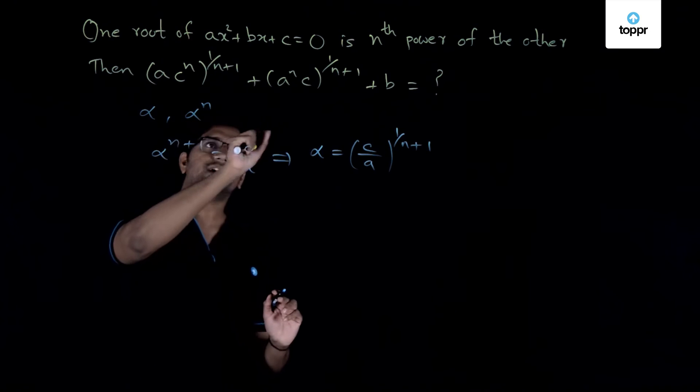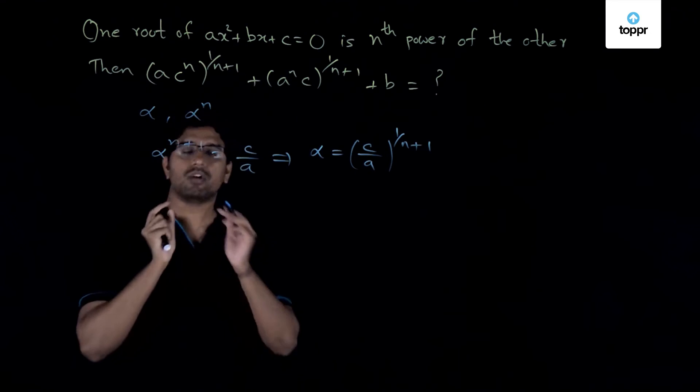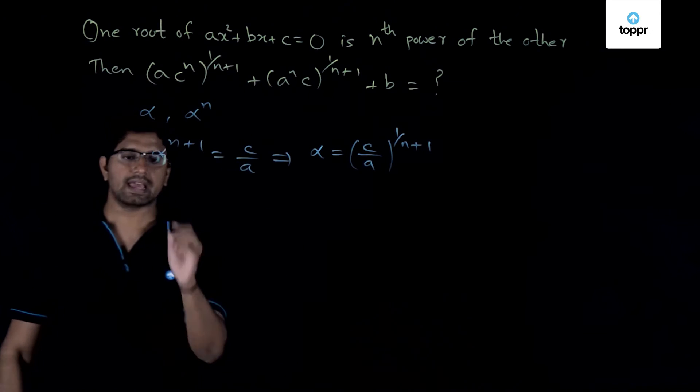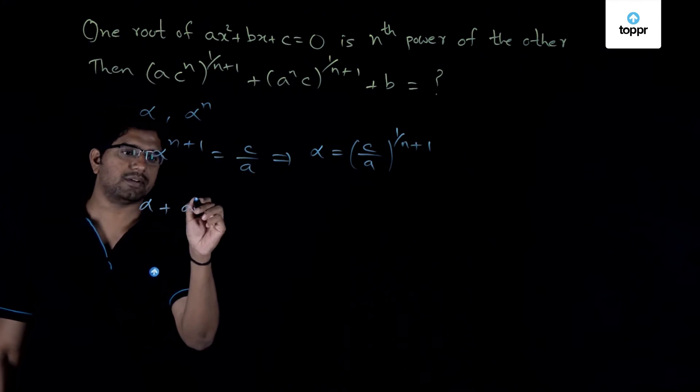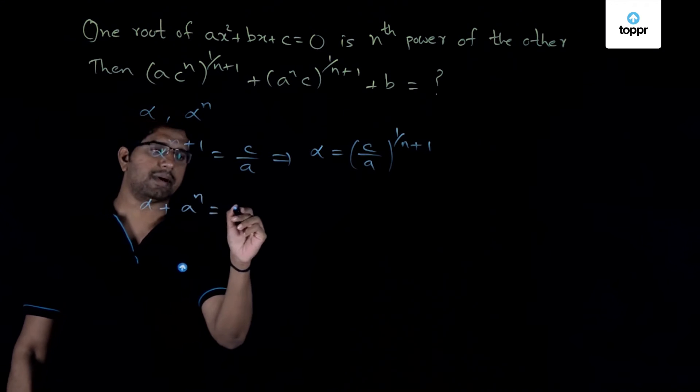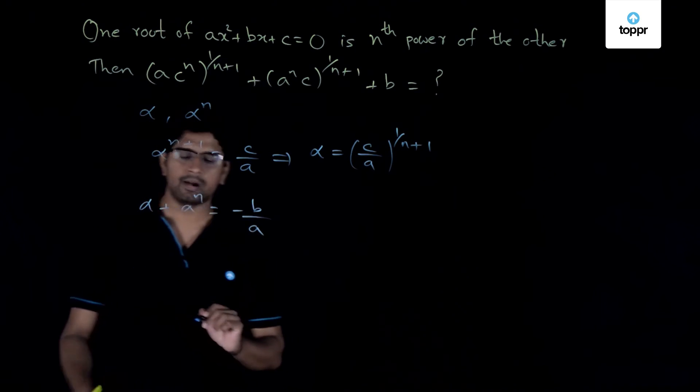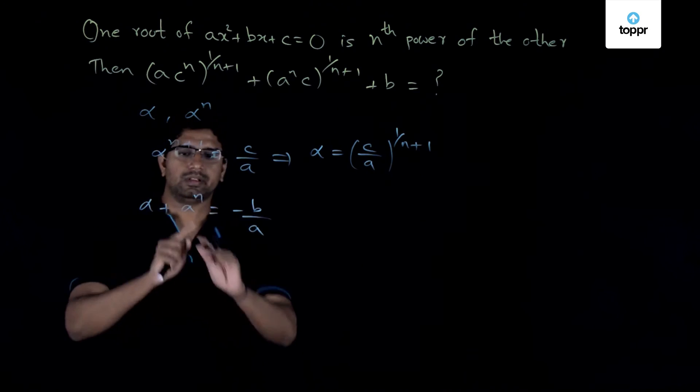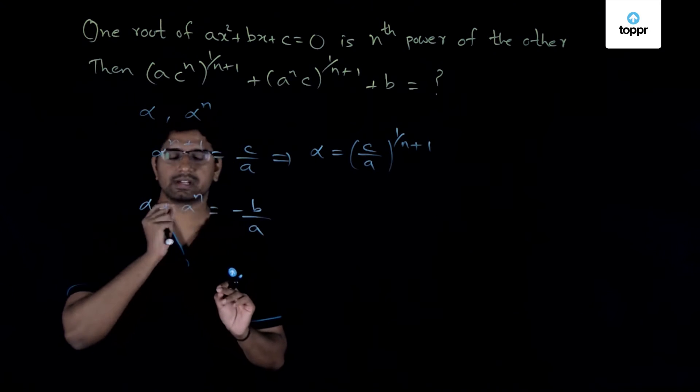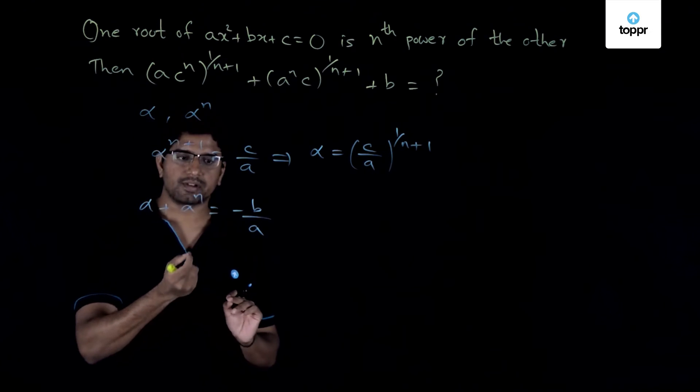Now let us try to get the other equation that involving the sum of the roots. So we have alpha plus alpha power n is equal to minus b by a. Alright? Now this is again a good equation. We can try to get some information from it.